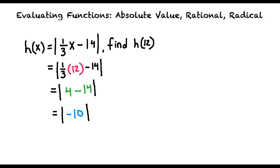So 4 minus 14 results in negative 10. Since the number inside the absolute value is negative it becomes positive. So the answer for the equation h of 12 equals 1 third x minus 14 is 10.